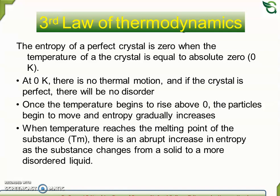At zero Kelvin there is no thermal motion, and if this crystal is perfect there will be no disorder. Once the temperature begins to rise above zero Kelvin, the particles begin to move and entropy gradually increases. When the temperature reaches the melting point of the substance, Tm, there is an abrupt increase in entropy as the substance changes from a solid to a more disordered liquid.